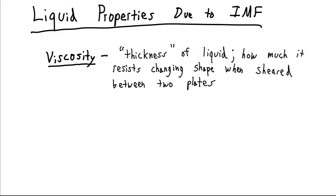First among them is viscosity. This is the thickness of the liquid. You can think of honey or molasses being thicker than water. Formally, this is how much these liquids resist changing shape when they are sheared between two plates.